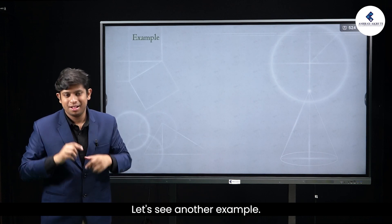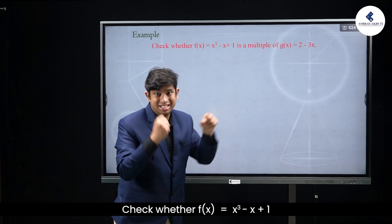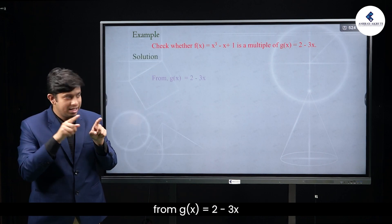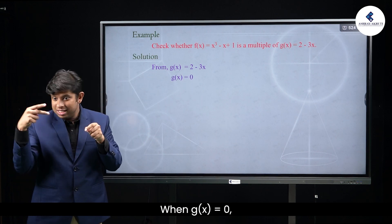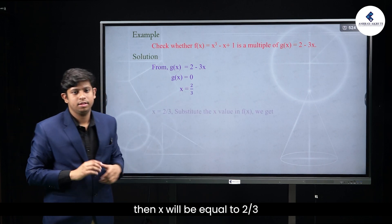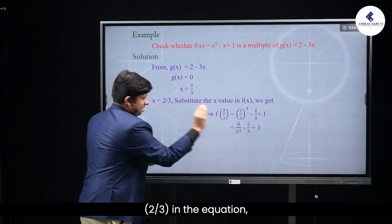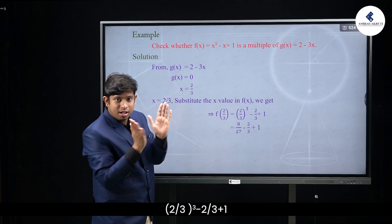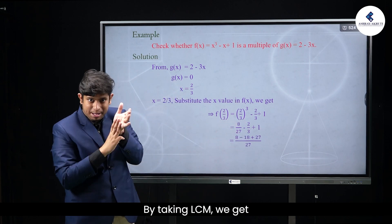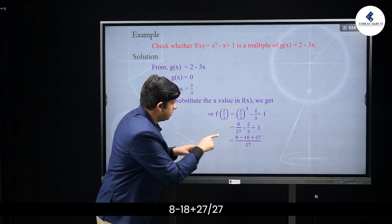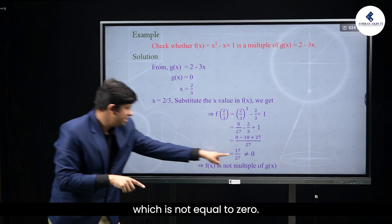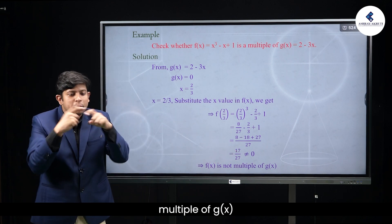Example: Check whether f(x) = x³ - x + 1 is a multiple of g(x) = 2 - 3x. Solution: From g(x) = 2 - 3x, when g(x) = 0, then x = 2/3. Substituting 2/3 into the equation: (2/3)³ - (2/3) + 1 = 8/27 - 2/3 + 1. Taking LCM, we get (8 - 18 + 27)/27 = 17/27, which is not equal to 0. Therefore, f(x) is not a multiple of g(x).